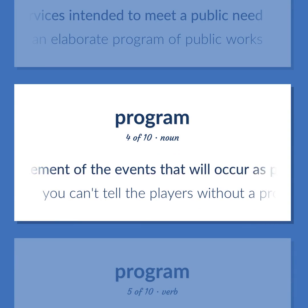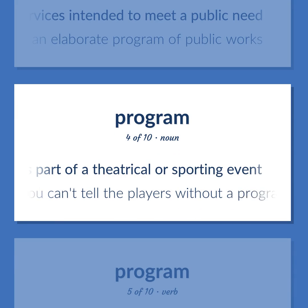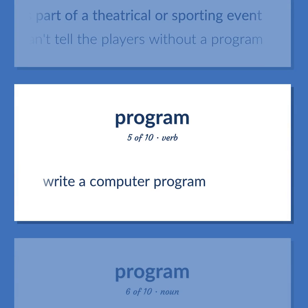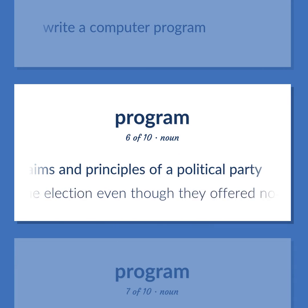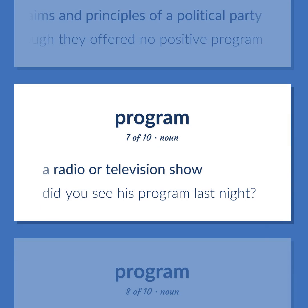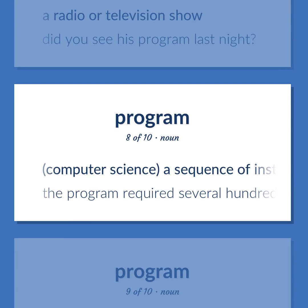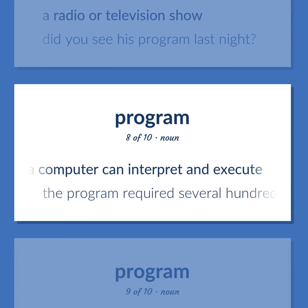Program: An announcement of the events that will occur as part of a theatrical or sporting event — you can't tell the players without a program. Write a computer program. A document stating the aims and principles of a political party — they won the election even though they offered no positive program. A radio or television show — did you see his program last night? Computer science: a sequence of instructions that a computer can interpret and execute — the program required several hundred lines of code.